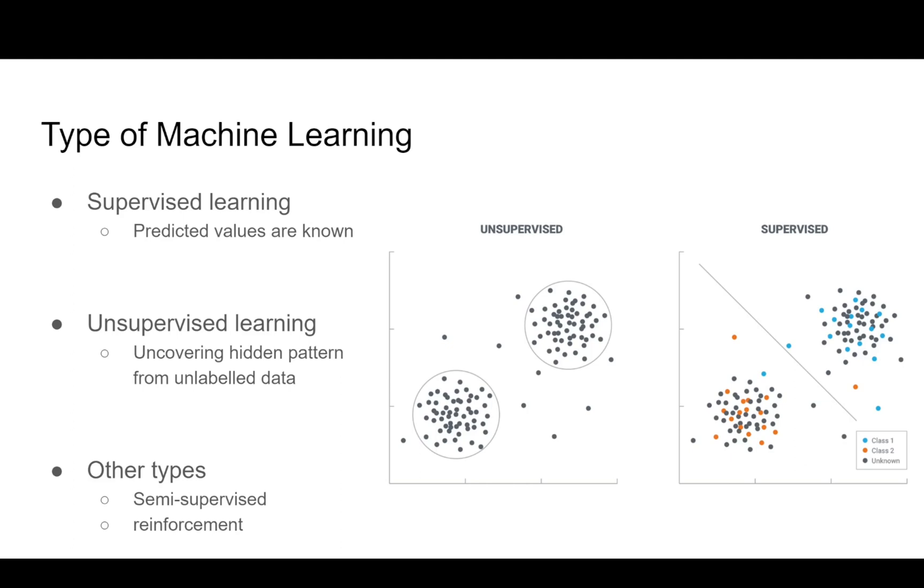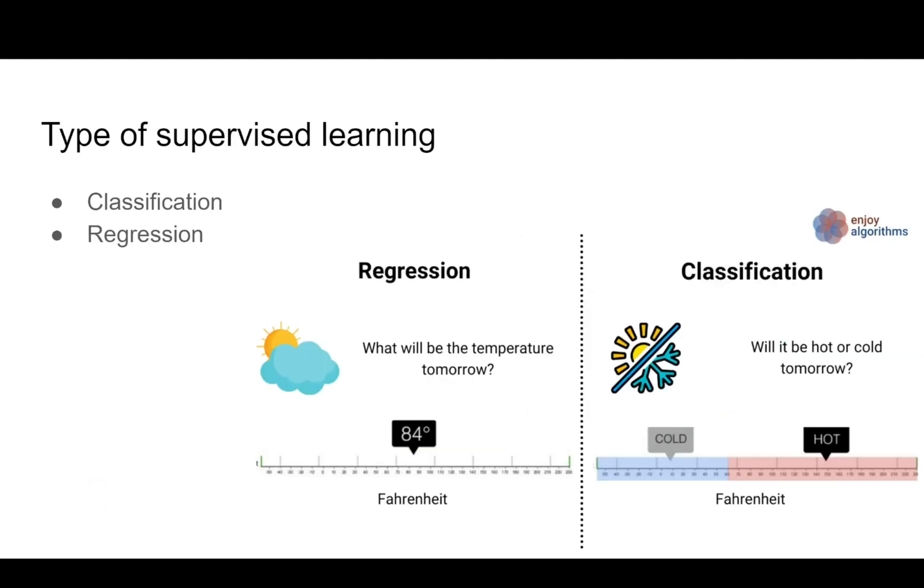Inside supervised learning, we have two types of problems: classification and regression. If you see in the image, classification means denoting which class the sample belongs to. Let's say in the case of weather, we have either cold weather or hot weather. If we classify the target value into two classes, it's a classification problem. It will help us solve the equation like will it be hot or cold tomorrow.